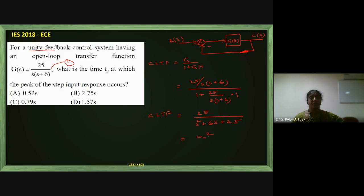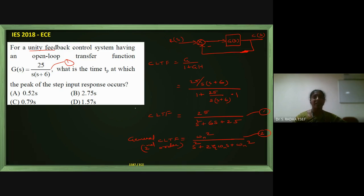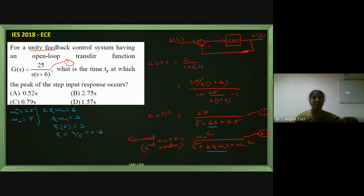The general format is ωn²/(S² + 2η·ωn·S + ωn²). Comparing the derived equation with this general format: from the numerator, ωn² = 25 so ωn = 5. From the denominator's second term, 2η·ωn = 6, so η·ωn = 3. With ωn = 5, η = 3/5 = 0.6.